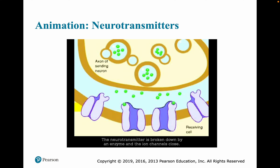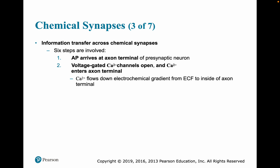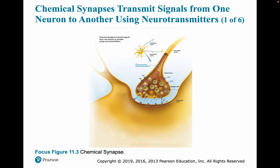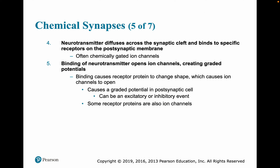The neurotransmitter is broken down by an enzyme, and the ion channels close. Enzymatic breakdown is one of several mechanisms by which transmission is terminated at chemical synapses. Information transfer across chemical synapses involves about six steps: the action potential gets to the axon terminal, that opens voltage-gated calcium channels, calcium gets into the axon terminal, and that entry of calcium causes the synaptic vesicles to fuse with the membrane to release their neurotransmitter. This involves SNARE proteins. Then the neurotransmitter diffuses across the synaptic cleft, binding to receptors on the postsynaptic membrane.